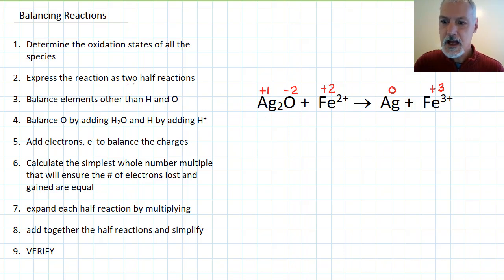Now to identify the two half reactions, one reaction is reduction, one is oxidation. I can take a look here at the silver and I can see that its charge has been reduced. So this represents the reduction half reaction. On the other hand, the iron is undergoing oxidation and an increase in its charge.